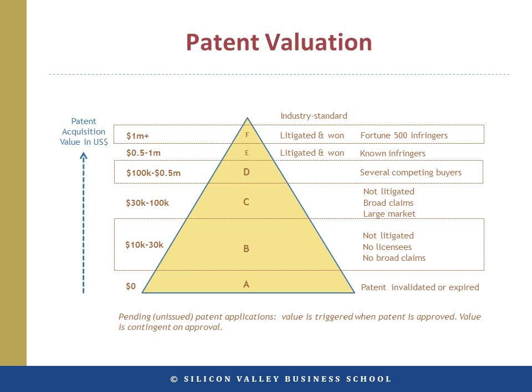Moving up to Group C, the patent value is in the region of $30,000 to $100,000 per issued US patent. If the patents have broad claims or the market is particularly strong and growing, then the price of unlitigated patents can increase towards the six-figure range.